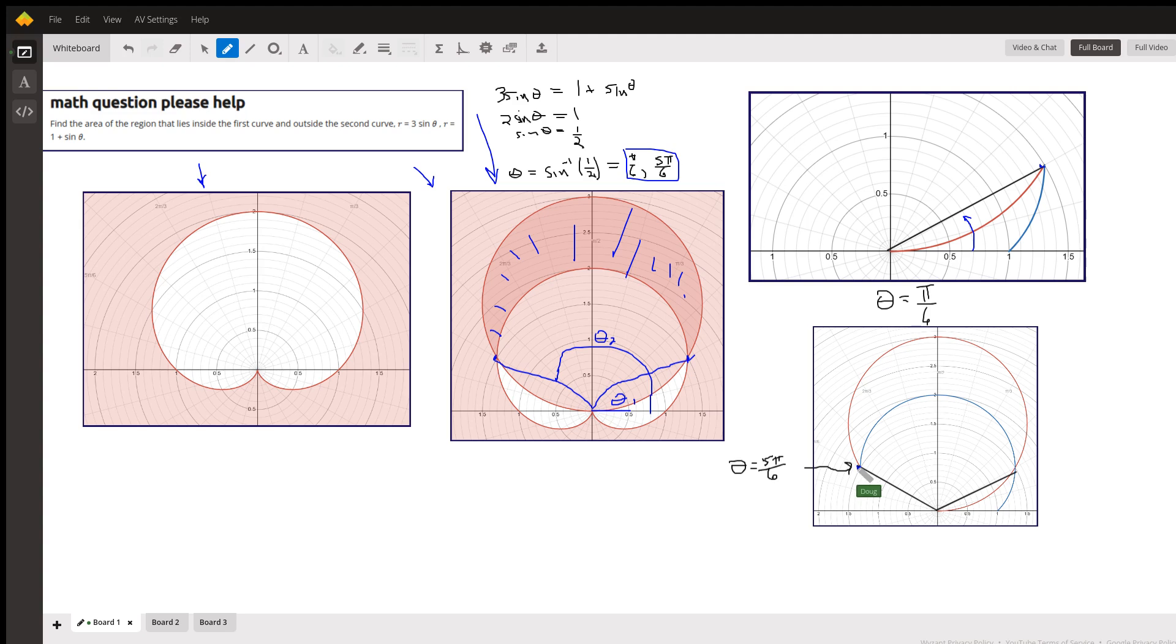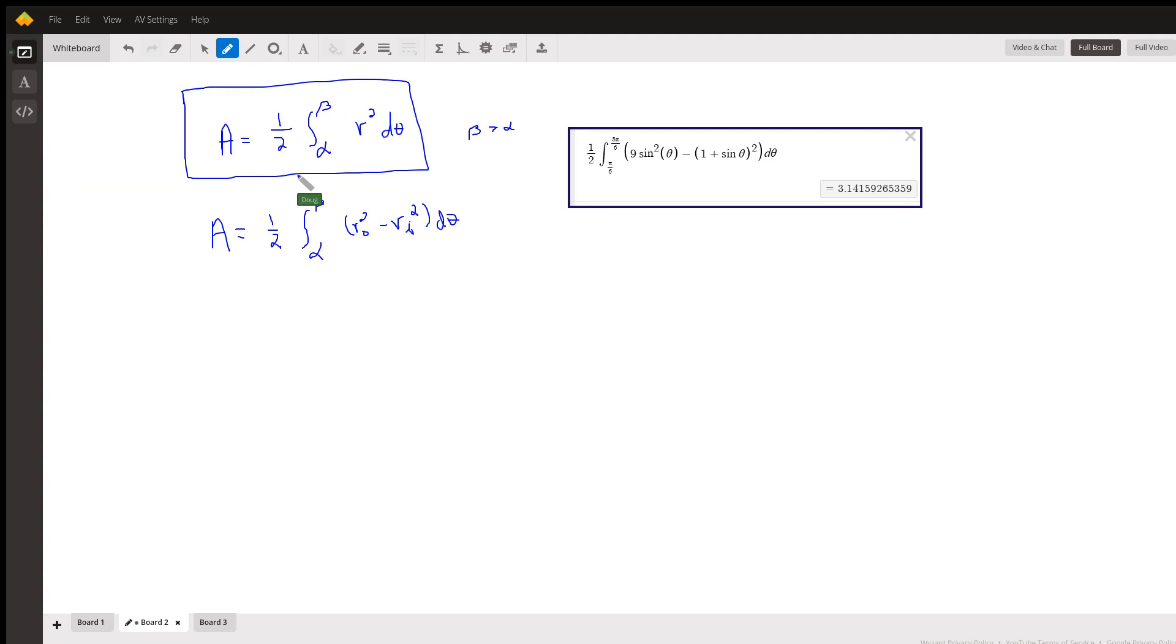So those are the points of intersection. And to use this formula, a equals 1 half, the definite integral from alpha to beta of r squared d theta. Beta has to be greater than alpha.